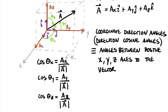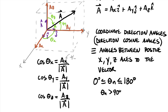These angles are always between 0° and 180°. If an angle theta_n is greater than 90°, that tells you the component A_n in that direction is negative. So a negative component gives you a coordinate direction angle greater than 90° but still less than 180°.